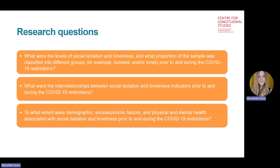We aimed to overcome some of these methodological limitations by answering three research questions: What were the levels of social isolation and loneliness, and what proportion of the sample was classified into different groups — isolated and/or lonely — prior to and during the COVID-19 restrictions? What were the interrelationships between different social isolation indicators and loneliness prior to and during the restrictions? And to what extent were demographic, socio-economic, and physical and mental health factors associated with isolation and loneliness in both periods?